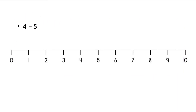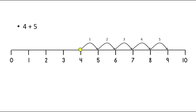The first one is 4 plus 5. We have to first point out the first number, that is 4, and then we have to move to the right 5 steps because here we have to add 5. The first move will be on 5, the second move is on 6, the third move is on 7, fourth move is on 8 and fifth move is on 9. As we have reached on the number 9, therefore the answer of 4 plus 5 is 9.